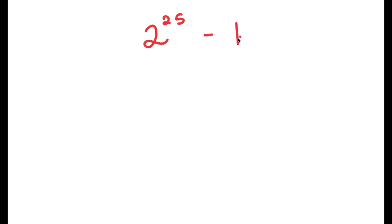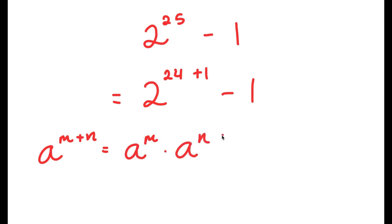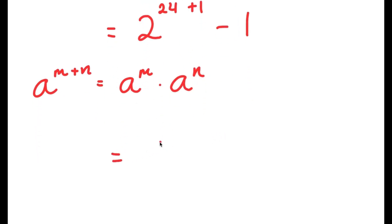In this video, I'm going to solve 2 to the power of 25 minus 1. To start, I'm going to rewrite 2 to the power of 25 as 2 to the power of (24 plus 1), then we have our minus 1 at the end. Using the property a to the power of (m plus n) equals a^m times a^n, this becomes 2 to the power of 24 times 2 to the power of 1, minus 1.